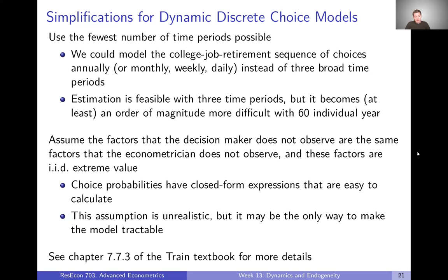The other simplification is to assume that the factors the decision maker does not observe — the sources of uncertainty — are the same things that we, the econometrician, don't observe, and to assume those are IID extreme value. This assumption is completely unrealistic, but it gives us choice probabilities with closed-form expressions that are easier to calculate. If the trade-off is between realistic assumptions that make the model intractable versus unrealistic assumptions that give us a tractable model, we may be willing to make those assumptions just so we can actually solve something.